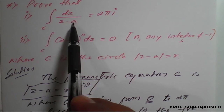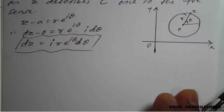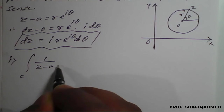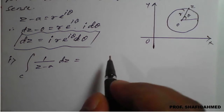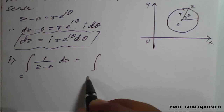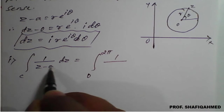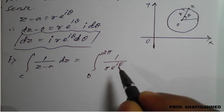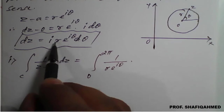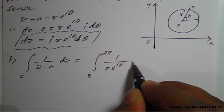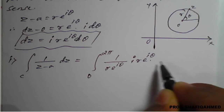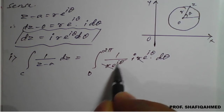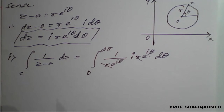With the help of this, we find the first result. The integration of 1/(z minus a) dz over c equals the integral from 0 to 2π of 1/(r · e^(iθ)) times i · r · e^(iθ) dθ. On simplification, r cancels with r and e^(iθ) cancels with e^(iθ), leaving i as a constant outside. Only dθ remains.